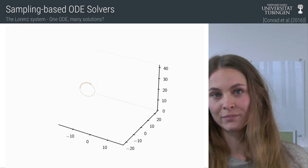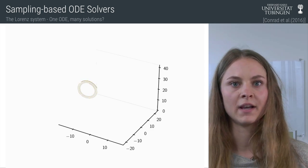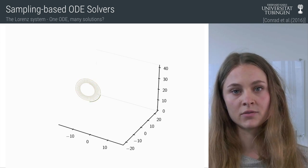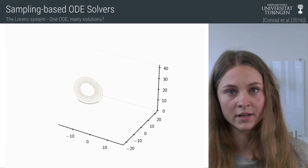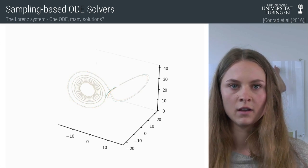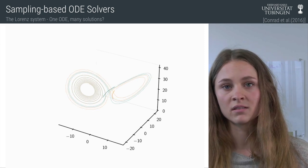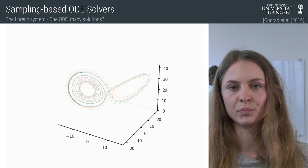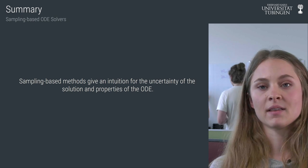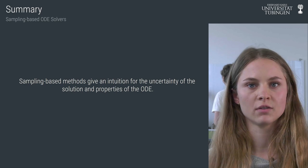How does this look in practice? Here you can see two samples of the Lorentz system solved by an ODE solver as proposed by Conrad et al. The trajectories are really similar in the beginning, and they start to diverge a little after a while. If we wait even longer, they go into completely different directions. This is not an accident but actually a property of the Lorentz system — the Lorentz system is symmetric. So sampling-based methods can give us an intuition for the uncertainty of the solution, and they can also reveal properties of the ODE.